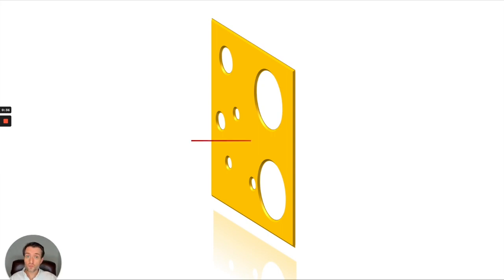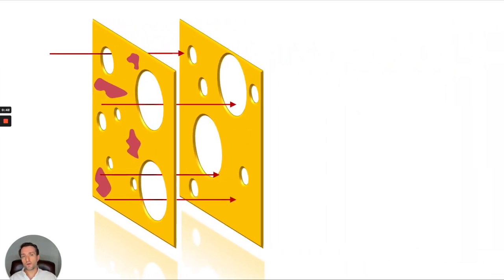Now imagine that an aggressor is trying to go through. Well, where there is cheese, the aggressor cannot go through, but obviously through the holes it can. If you only have one layer of defense, the aggressor is going to go through the holes.